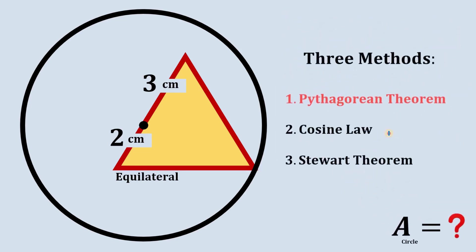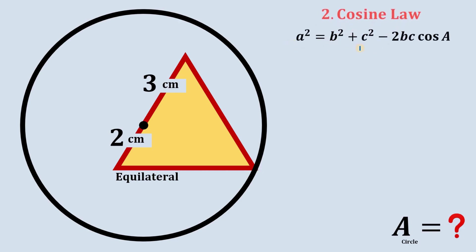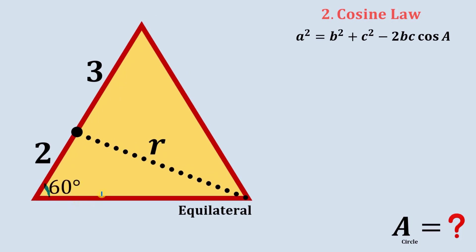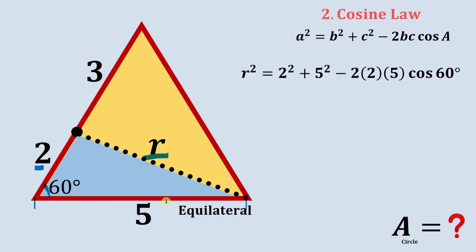Now for the second solution using cosine law. The cosine law is: a² = b² + c² − 2bc·cos(A), where A is the angle opposite side a. To find the area we need the radius. The side of the equilateral triangle is 2 + 3 = 5. Using this triangle, we apply the cosine law: r² = 2² + 5² − 2(5)(2)·cos(60°).